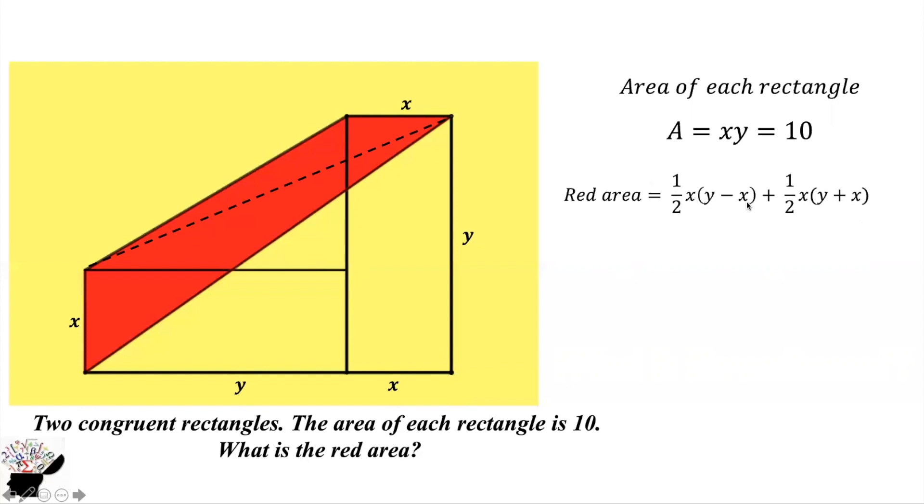x into bracket y minus x, that is the first part, and the second triangle is plus half x into bracket